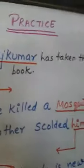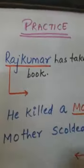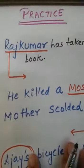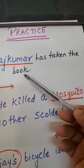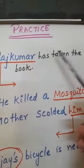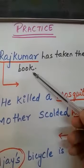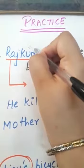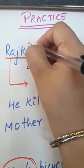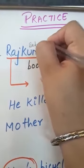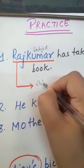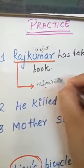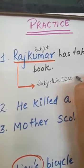Let's do the practice to identify the subjective case, objective case, and possessive case. First example: Rajkumar has taken the book. Who is the doer here? Rajkumar. Rajkumar is the subject — it is used as a subject of the verb, so this sentence is said to be in subjective case.